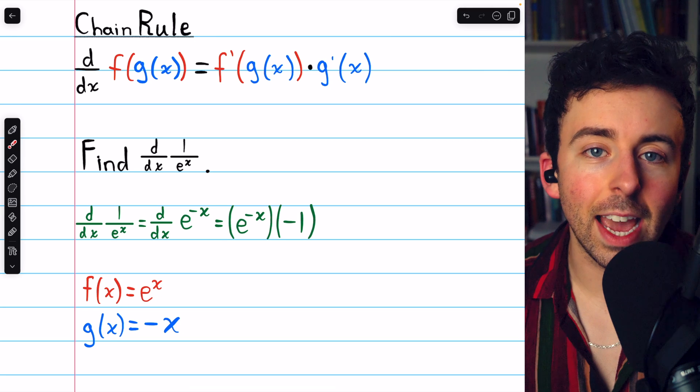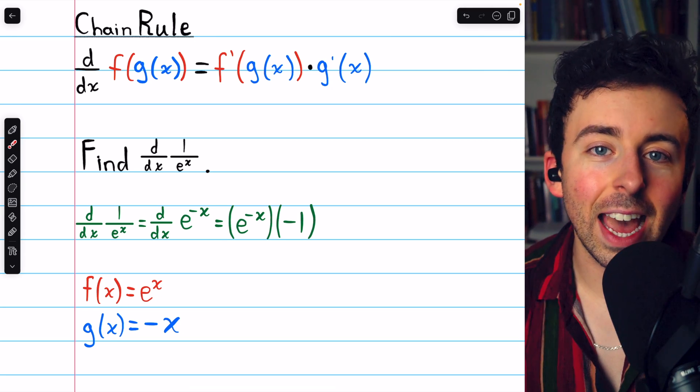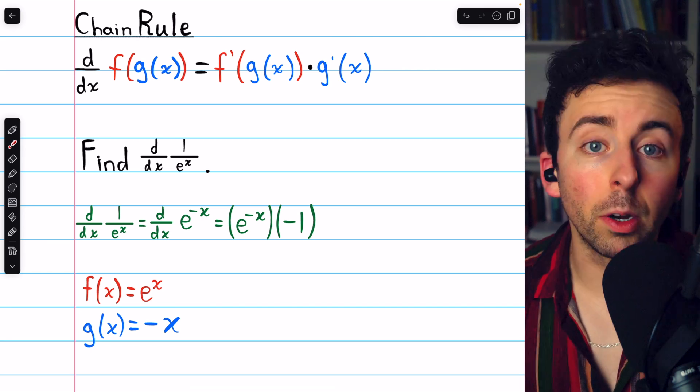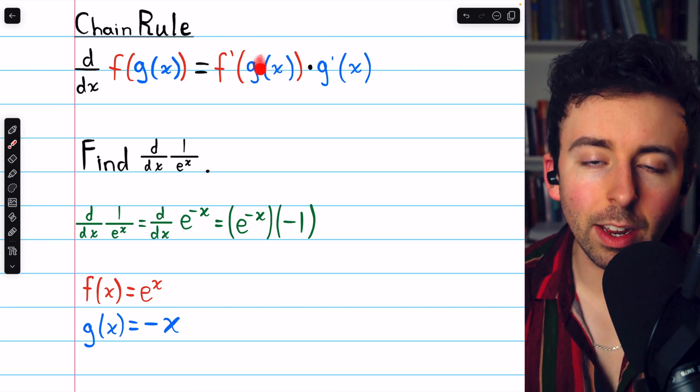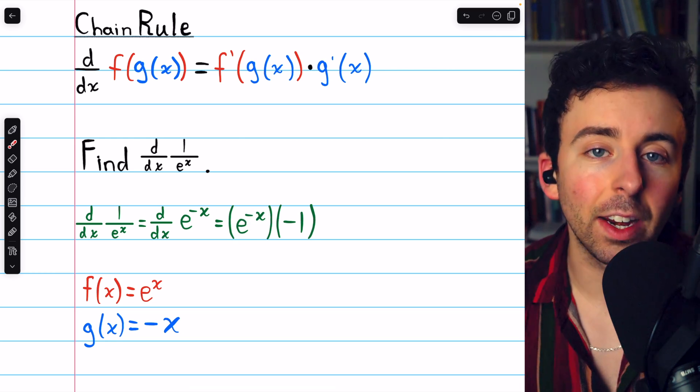f of x is e to the x, so we begin with f prime. The derivative of e to the x is just e to the x. But remember, we need to leave the inside function unchanged, so we actually have e to the negative x.